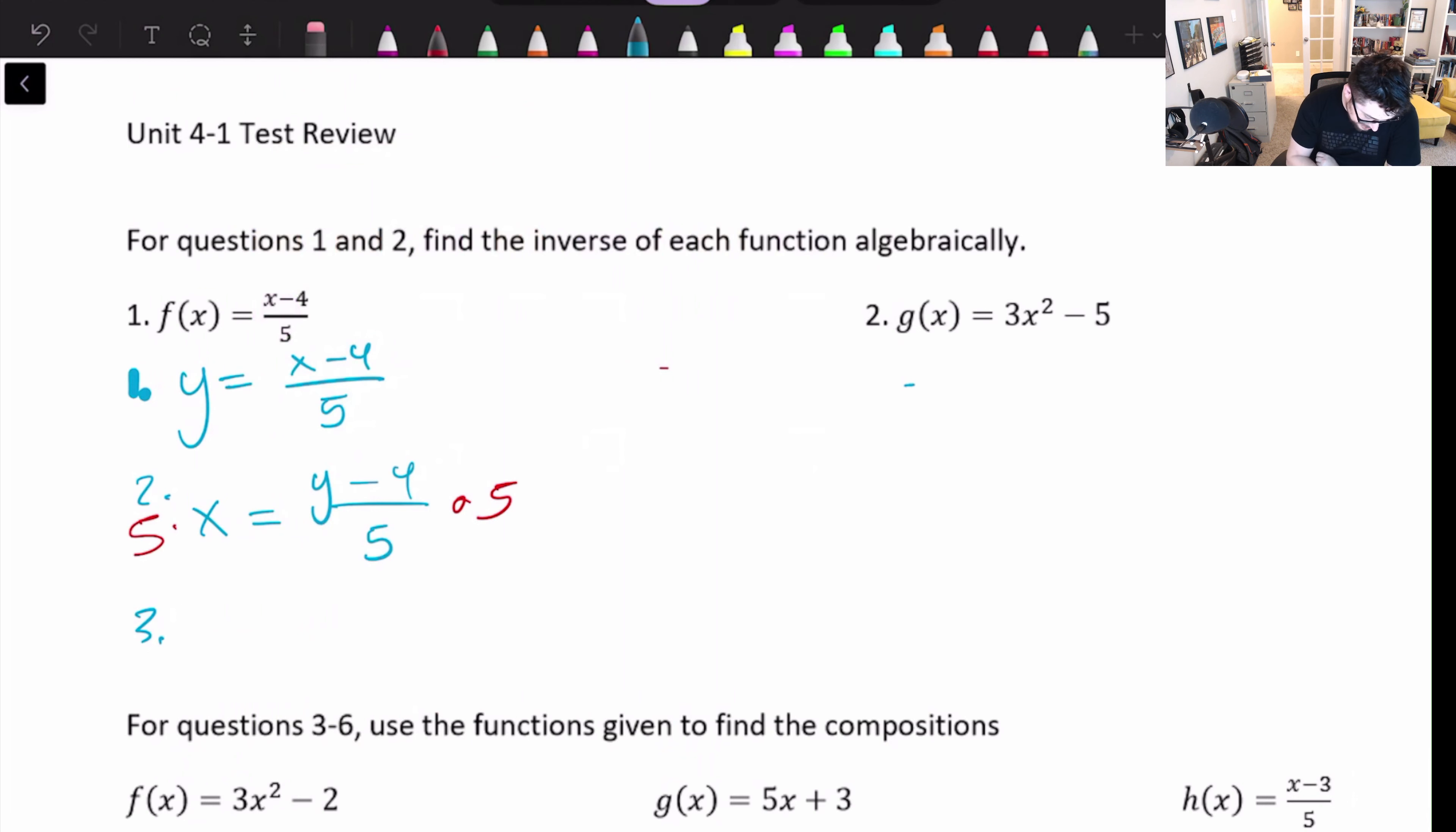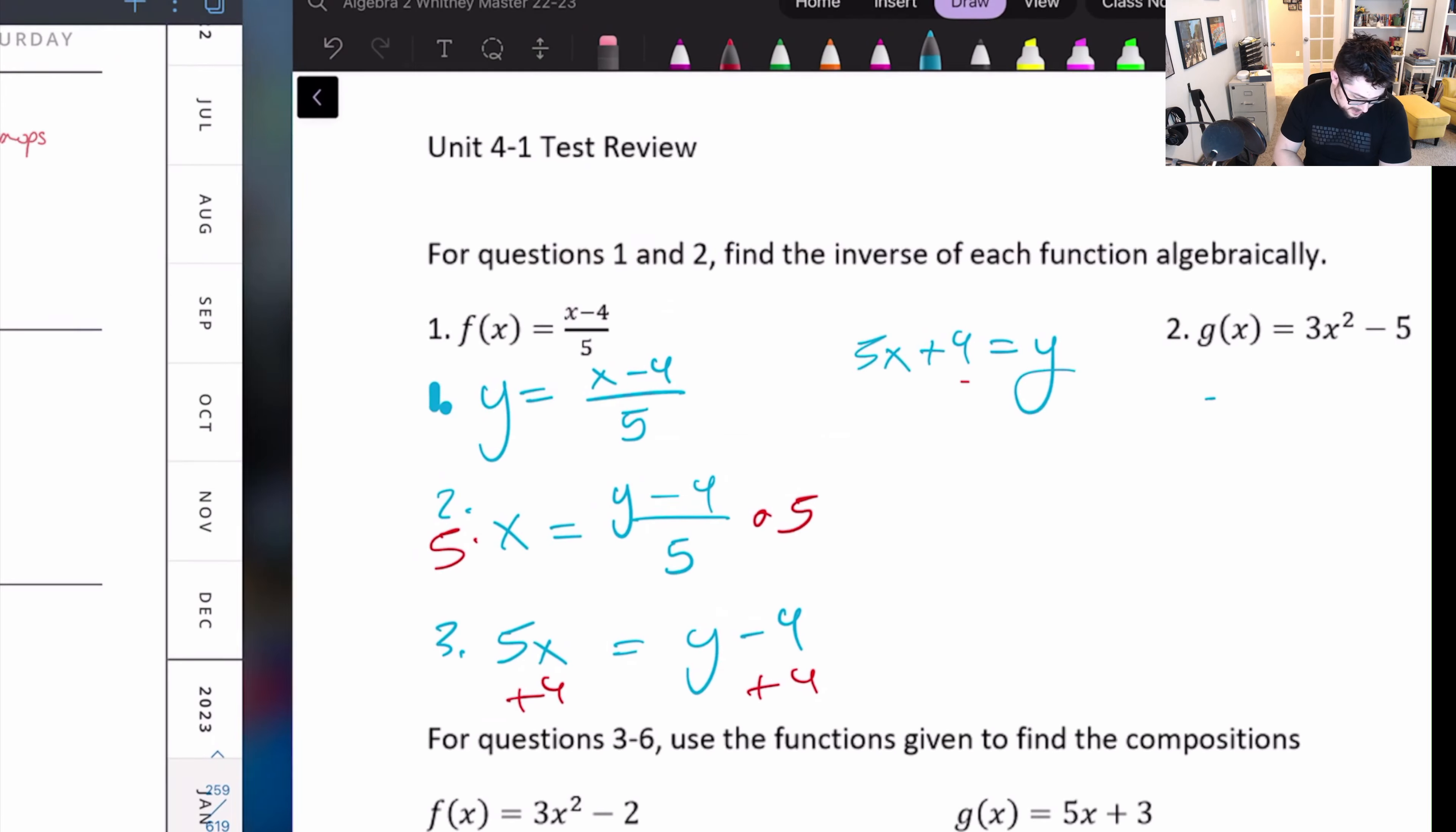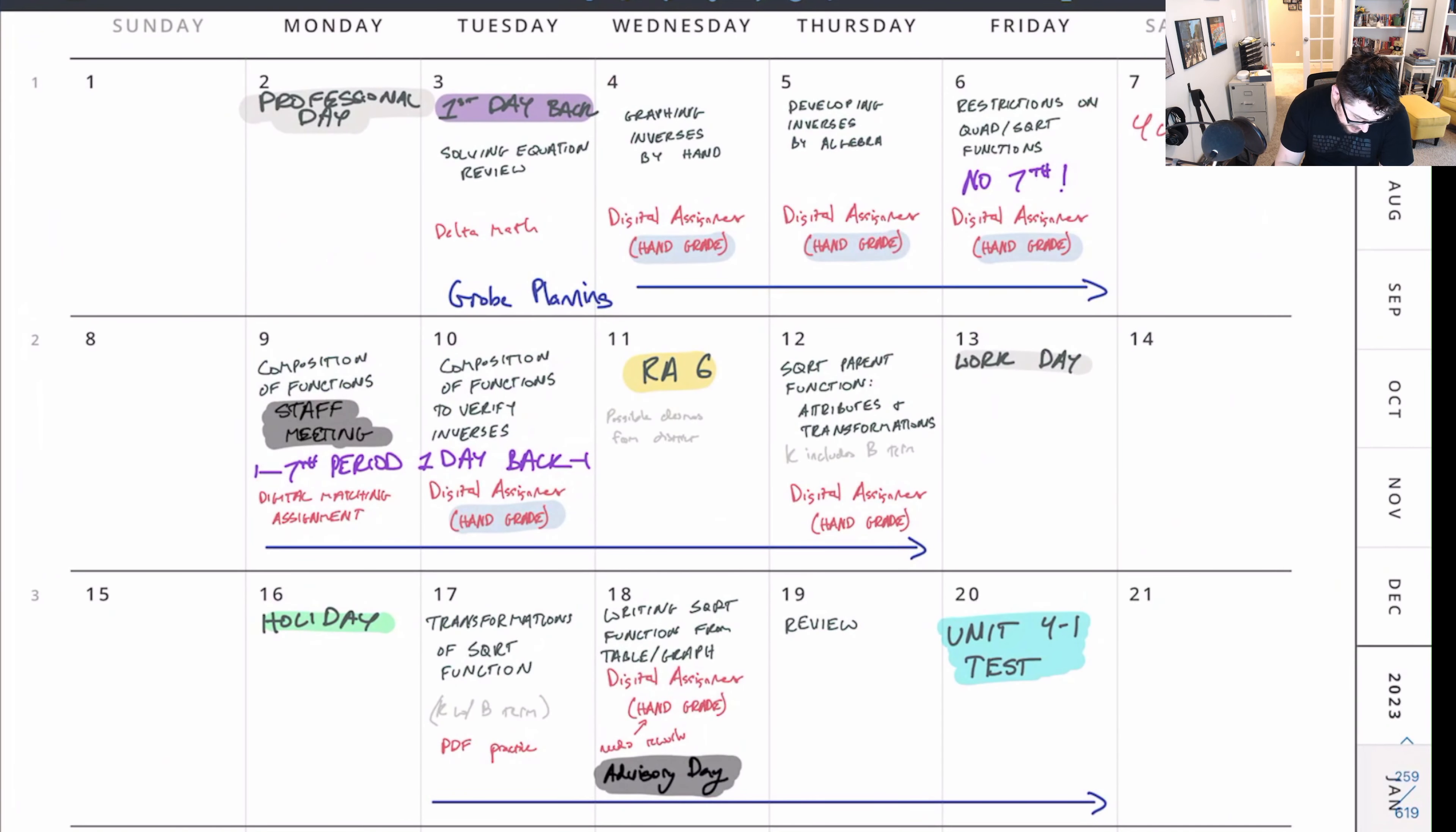then y now have is 5x equals y minus 4. And then from there, I can just add 4 to both sides. And it becomes 5x plus 4 equals y. And that should be our inverse. So that method of inversing is something that we covered, not on the first day back, but we covered it here on January 5th. So I would recommend looking over that day.